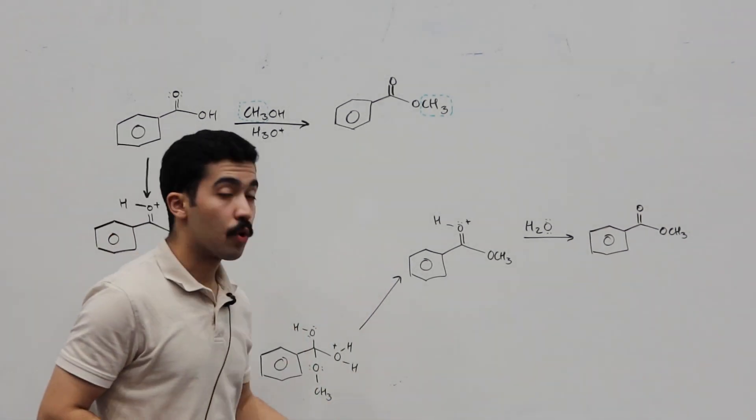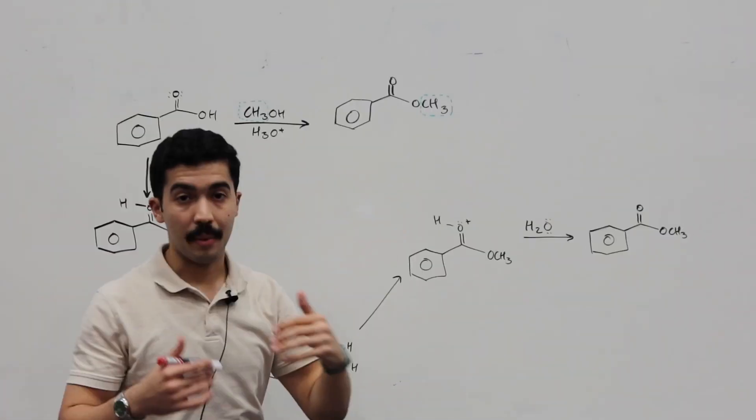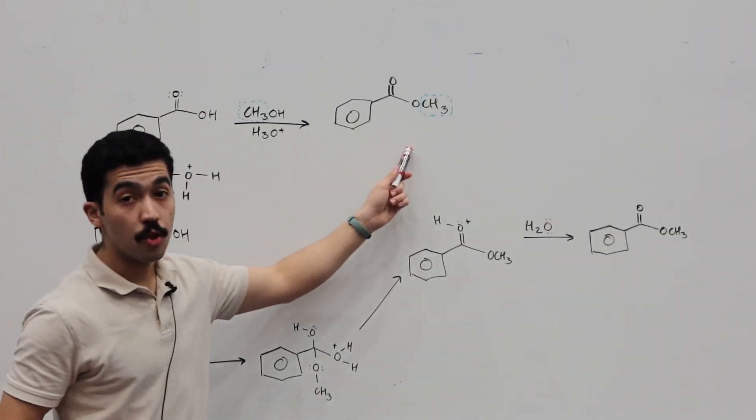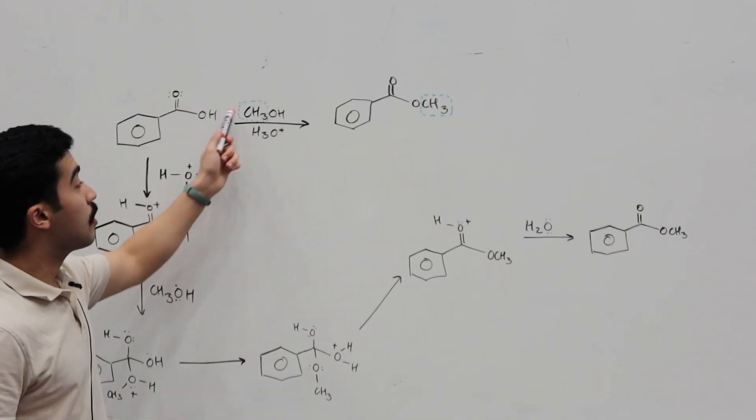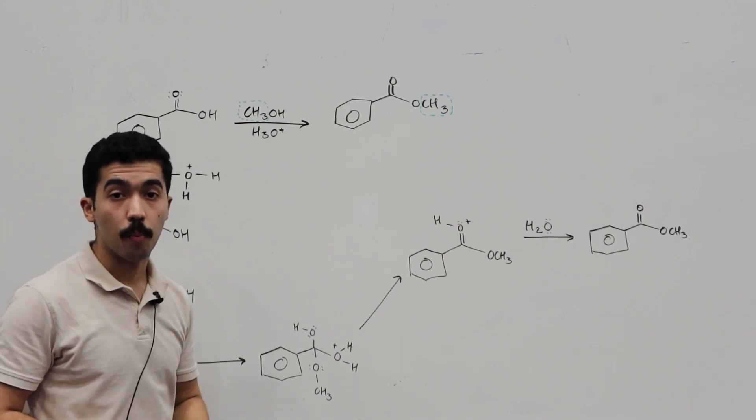All right, hey, what's up folks? Today we're looking at converting a carboxylic acid into an ester. In this case, we're looking at converting benzoic acid into methylbenzoate, and our reagent is methanol, so CH3OH, and we're using an acid H3O+.